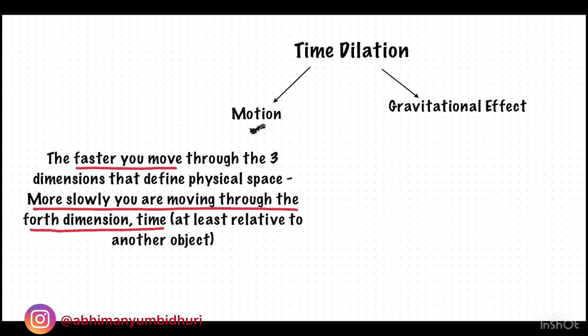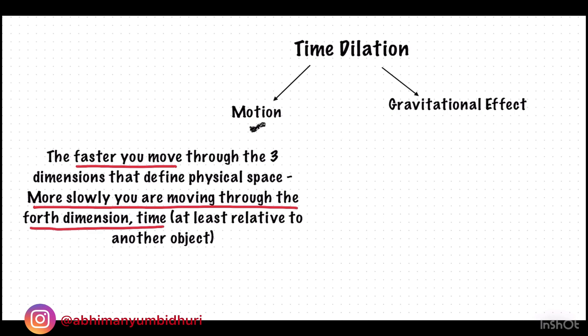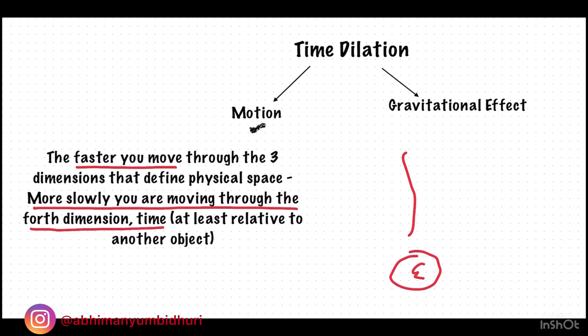Let's understand how time is altered by relativistic motion. The faster you move through the three dimensions that define physical space, the more slowly you're moving through the fourth dimension, that is time. For example, if there are two persons of the same age and one stays on Earth while the other travels to space at a very high speed and returns, he will find that he is much younger than the person who stayed back on Earth. Motion through 3D space not only affects biological processes but also affects atomic clocks.